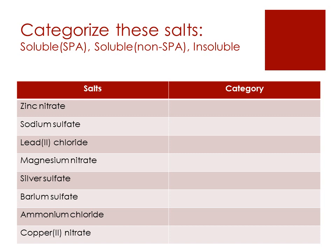Now let's put our memory to the test. There are three different categories and you will need to group the salts according to: soluble SPAR, soluble non-SPAR, or insoluble. Firstly, zinc nitrate — we know that all nitrates are soluble, so zinc nitrate is a soluble non-SPAR salt. Secondly, sodium sulfate — from the word sodium, we can quickly categorise it as a soluble SPAR salt. Third, lead 2 chloride — lead 2 chloride is an insoluble salt.